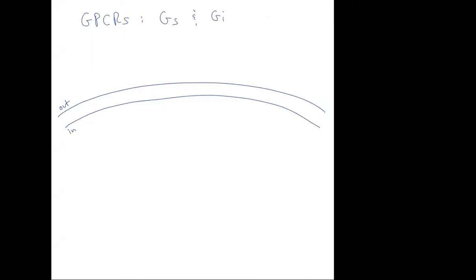We're going to talk about the GPCR Gs and Gi pathways. We'll start with the Gs pathway and then add on the Gi second. Remember that G protein coupled receptors look like this. They span the membrane seven times.